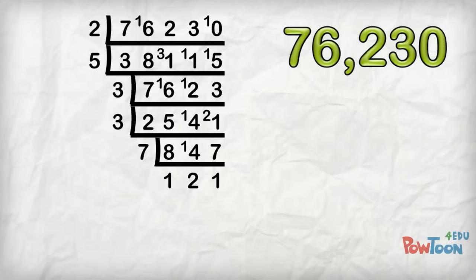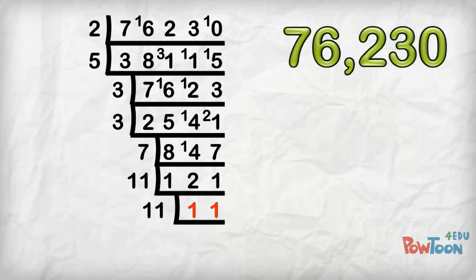121. I know this is in the 11 times table. 11 11's are 121, and 11 is a prime number. So 11 divided by 11 is 1, and we're done!